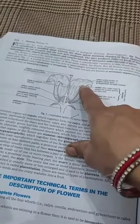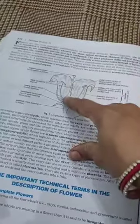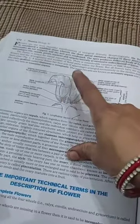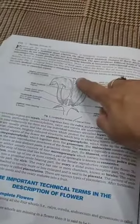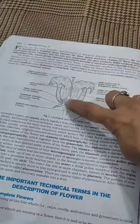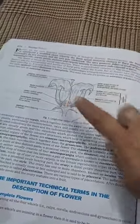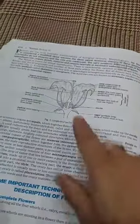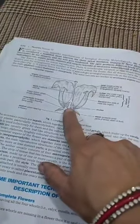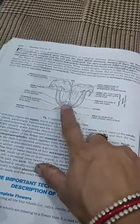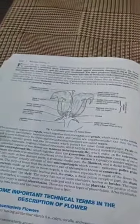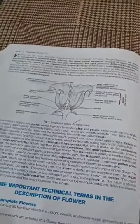The stamen consists of two parts: the anther and the filament. The anther contains pollen grains, which are the male gametes. The central part is the female part, or gynoecium, also known as the carpel or pistil. It has the stigma, style, and ovary. Inside the ovary, small rounded structures called ovules are present. After fertilization, ovules change into seeds and the ovary changes into fruit.